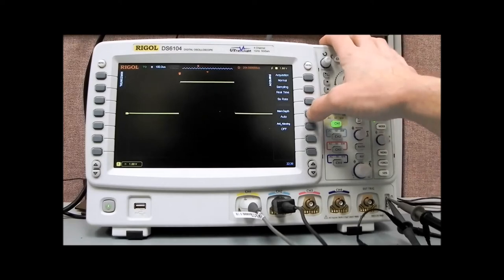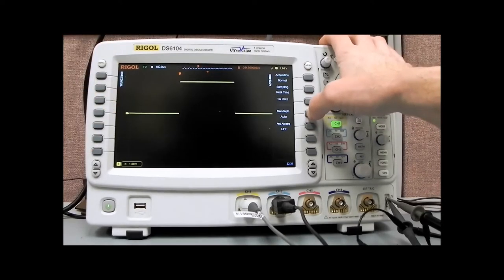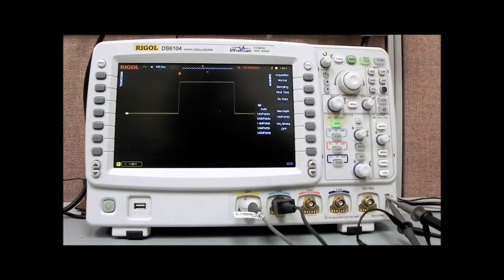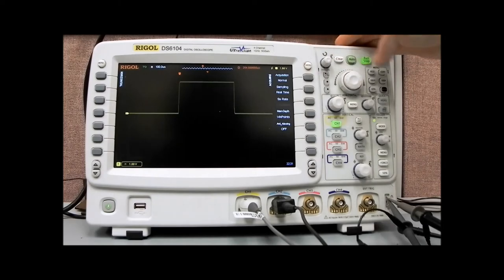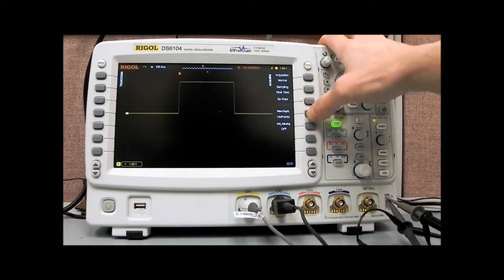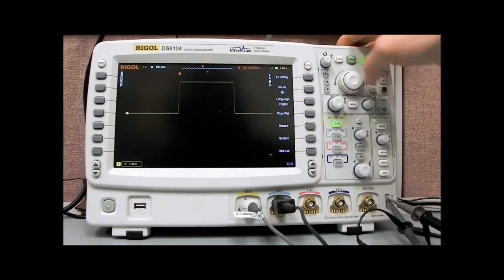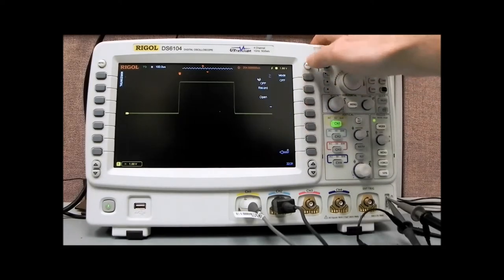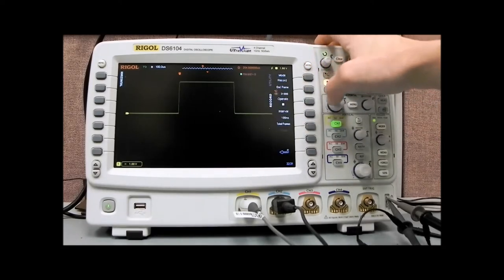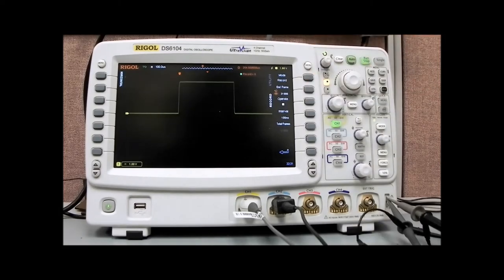In auto, it's going to automatically select the number of data points to be collected. But we can also force the scope into manual mode. Let's say, let's collect 14,000 points per waveform. If we go back over to record, we can see now we have 3000 frames that we can collect.